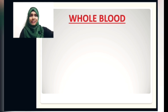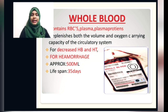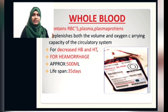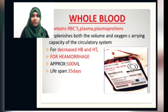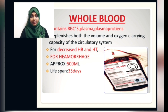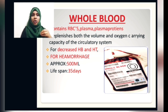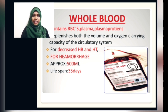Whole blood transfusion is most commonly done in patients with obvious hemorrhage. It contains RBC, plasma, plasma proteins, and coagulation elements. Its main function is restoring blood volume and oxygen-carrying capacity of the circulatory system. It is indicated for large hemorrhage and decreased hematocrit or hemoglobin level. Approximately one unit consists of 500 ml, the lifespan is 35 days, and it must be stored at 2 to 8 degree Celsius. Since whole blood contains cellular debris, a filtered infusion set must be used to prevent agglutination reactions.